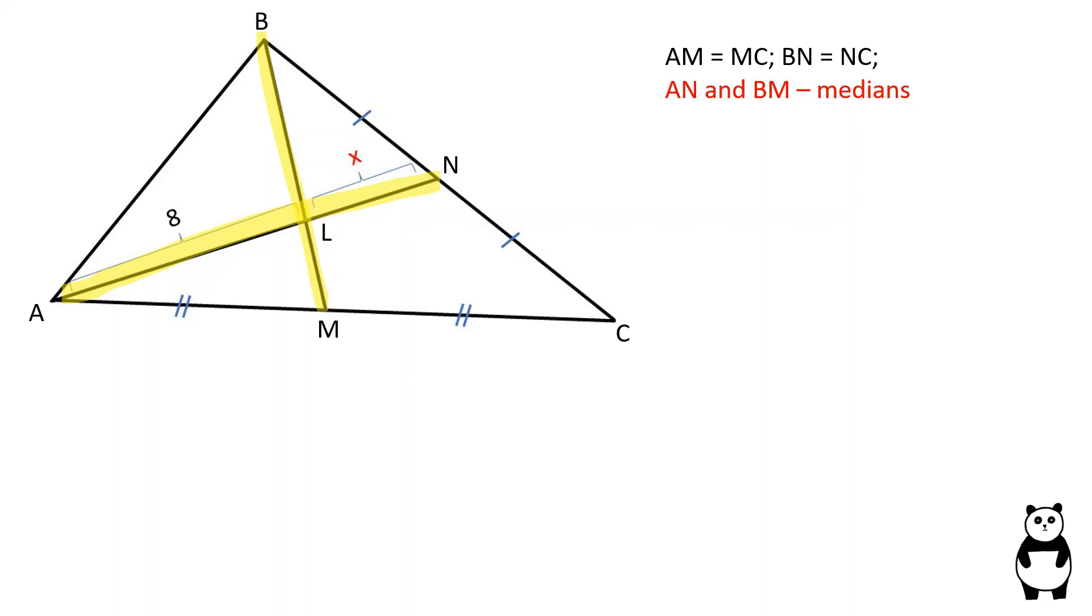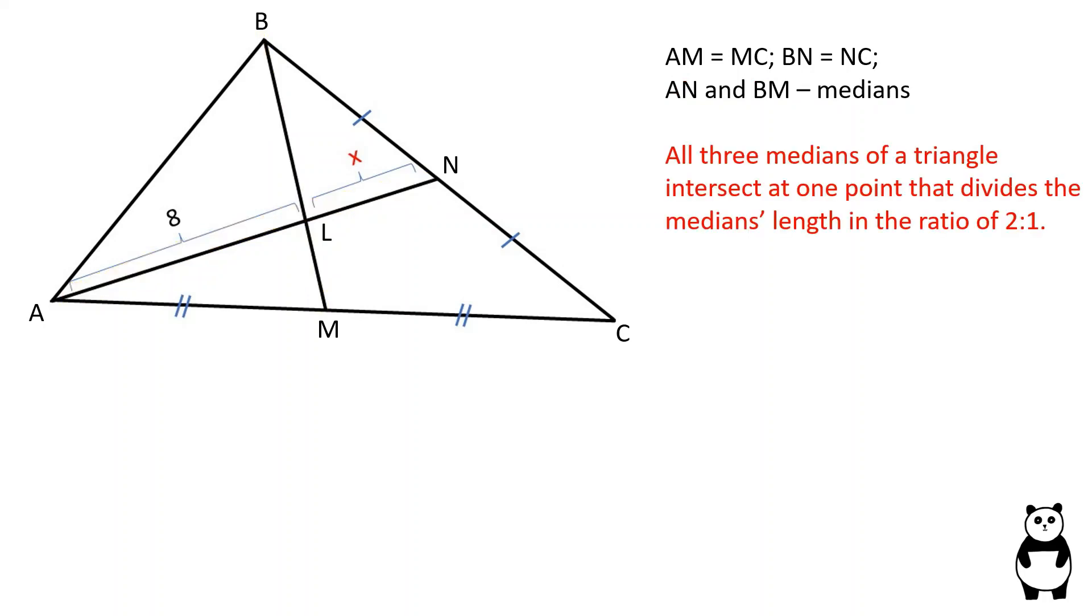We can use the following property of triangle medians. All three medians of a triangle intersect at one point that divides the median's length in the ratio of 2 to 1.